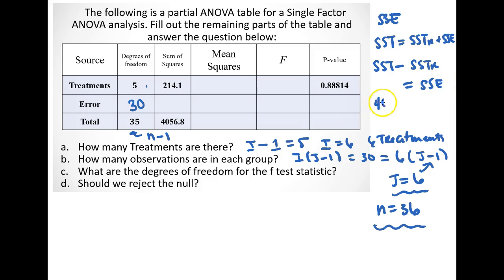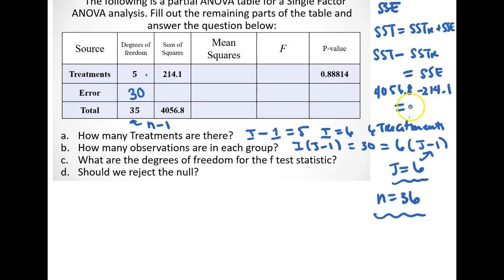So in other words, 4056.8 minus 214.1 is equal to our sums of square error, which is 3842.7.